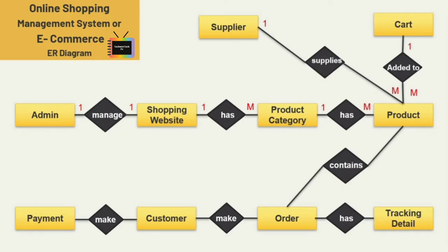For cart and products, we can add many products into one cart. One customer can place many orders, and if a customer places many orders they also have to make payment for different orders, so one customer can make many payments. One order contains many products, and one order has many tracking details because when many products are ordered in one transaction, each product has a different tracking ID.